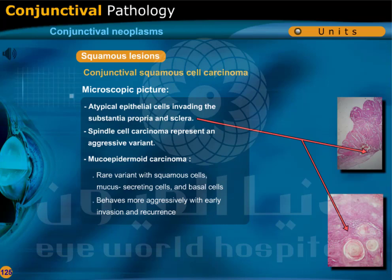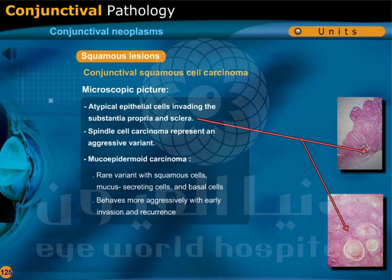Mucoepidermoid carcinoma is a rare variant with squamous cells, mucus-secreting cells, and basal cells. It behaves more aggressively with early invasion and recurrence.